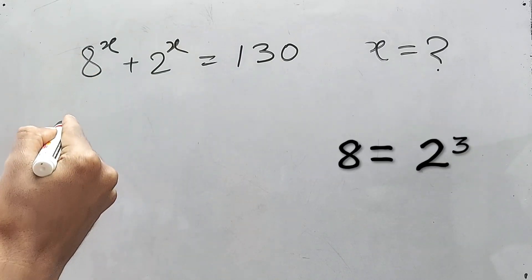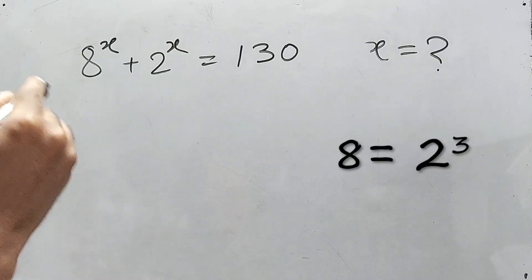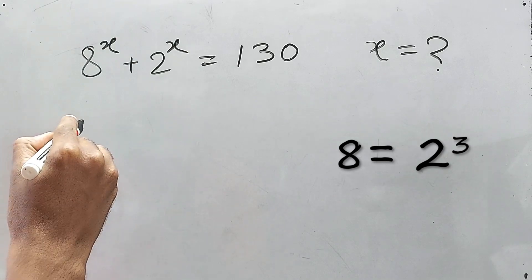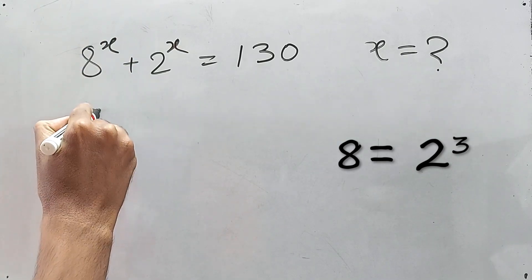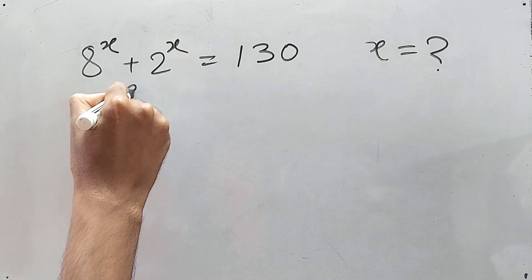See, first of all let us find what is 8. 8 means 2 cube, so 2 to the power 3x, right? So this one we can write 2 to the power x whole cube.